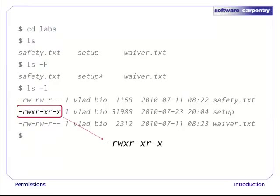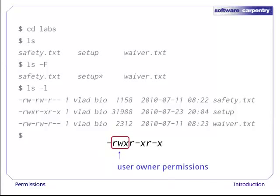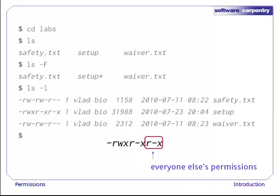Let's expand one of those permission strings and have a closer look. The first character tells us what type of thing this is — a dash means it's a regular file, while a D means it's a directory. The next three characters tell us what permissions the file's owner has; here, the owner can read, write, and execute the file. The middle triplet shows the group's permissions — R-X means read and execute but not write. The final triplet shows what everyone who isn't the file's owner or in the file's group can do; in this case it's R-X again, so everyone on the system can look at the file's contents and run it.